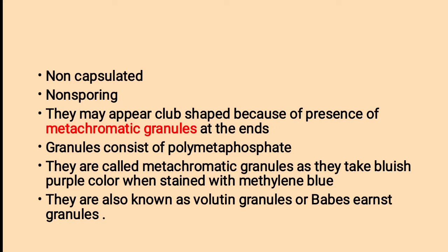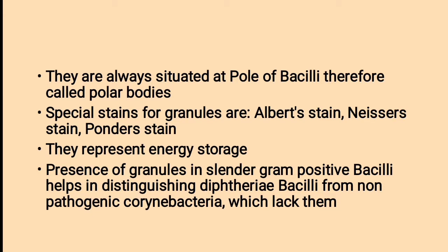They may appear as club-shaped because of the presence of metachromatic granules at the ends. Granules consist of poly-metaphosphate. They are called metachromatic granules as they take bluish-purple color when stained with methylene blue. They are also known as volutin granules or Babes-Ernst granules. Formation of metachromatic granules is the important property of Corynebacterium diphtheriae. They are always situated at the pole of the bacilli, therefore called polar bodies.